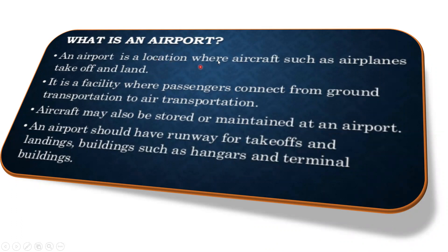An airport is a location where an aircraft such as airplanes can take off or can do the landing activity. It is a facility where the passengers connect from ground transportation to the air transportation. Aircraft may also be stored or maintained at an airport. An airport should have a runway for takeoff and landing operations, and buildings such as hangars and terminal buildings.